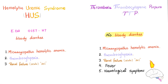We have talked about the difference between hemolytic uremic syndrome and TTP in previous videos. In a nutshell, typical HUS involves E. coli O157:H7 — the diarrhea-positive HUS — with a triad of microangiopathic hemolytic anemia, thrombocytopenia, and acute renal failure. TTP, however, has no bloody diarrhea, no E. coli O157:H7, and presents with a pentad: microangiopathic hemolytic anemia, thrombocytopenia, renal failure, plus fever and neurological symptoms. Note that renal failure is very rare in TTP but common in HUS.